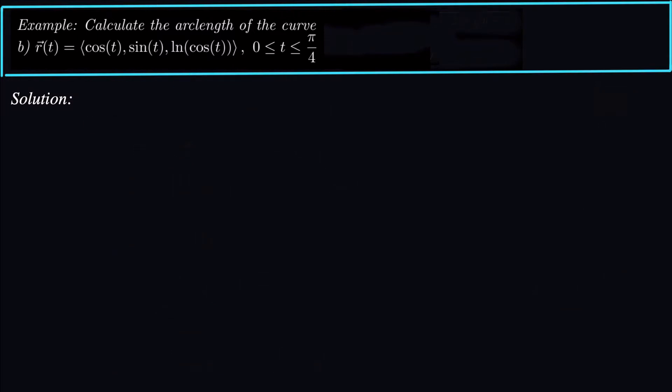So just again, we're going to start off with our arc length formula. We know that it's going to be s is equal to the integral, in this case, 0 to pi over 4, magnitude R prime dt.